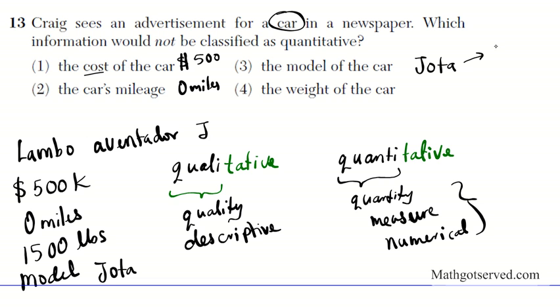This is qualitative. The Jota model just tells you that the car is topless, it's a convertible. You cannot ascribe a numerical quantity or measure to the model of the car. You can just give it a name. It could be model 1, but it's not a measure. It's just a description of the car. How about the weight of the car? Can you ascribe a number to it? Absolutely. 1,500 pounds is a numerical measure.